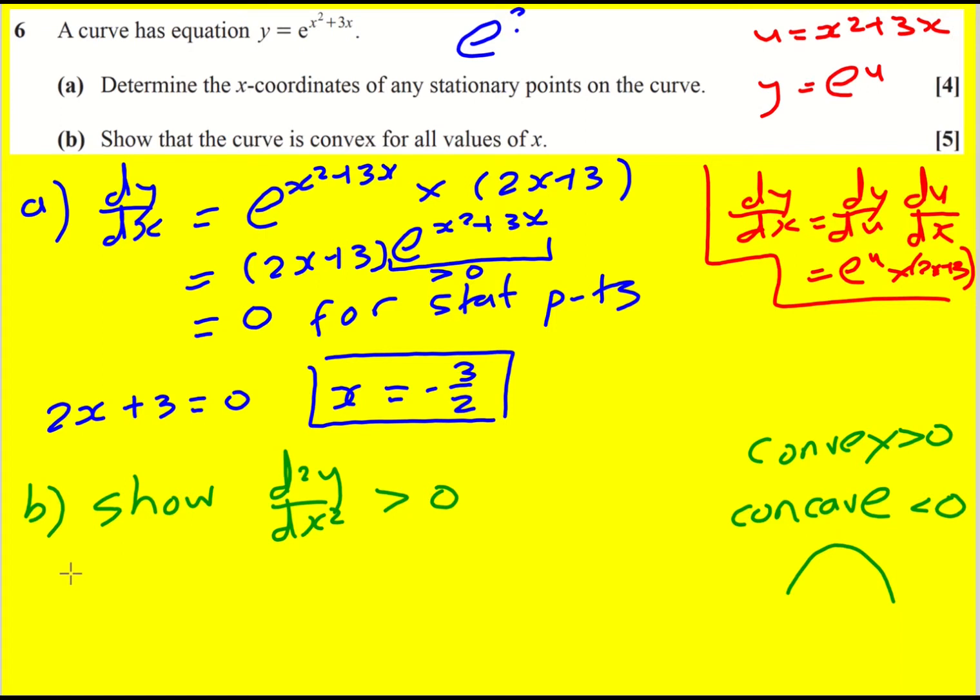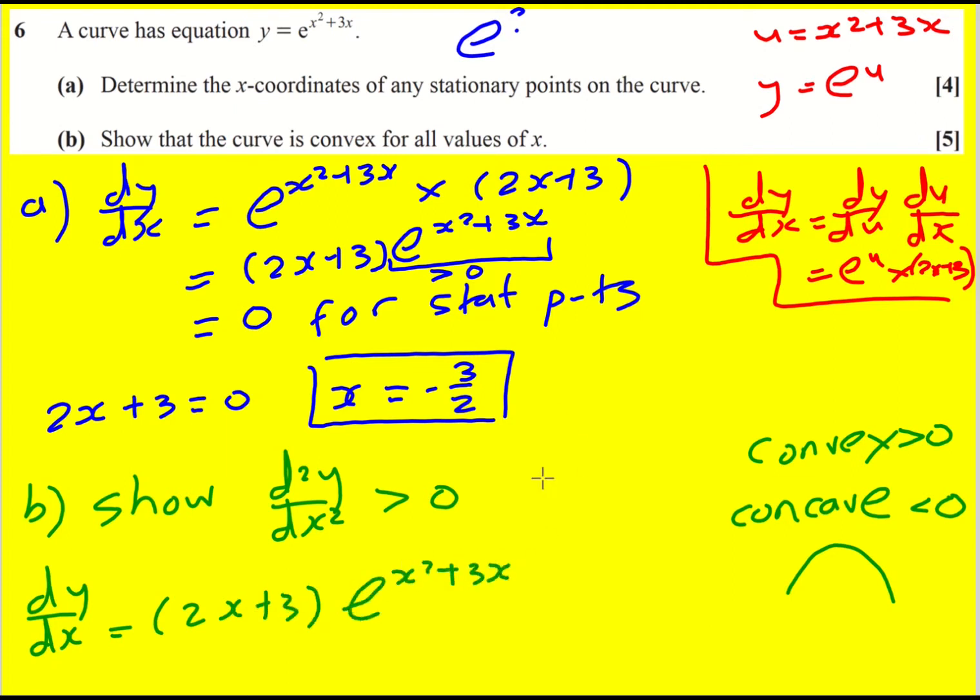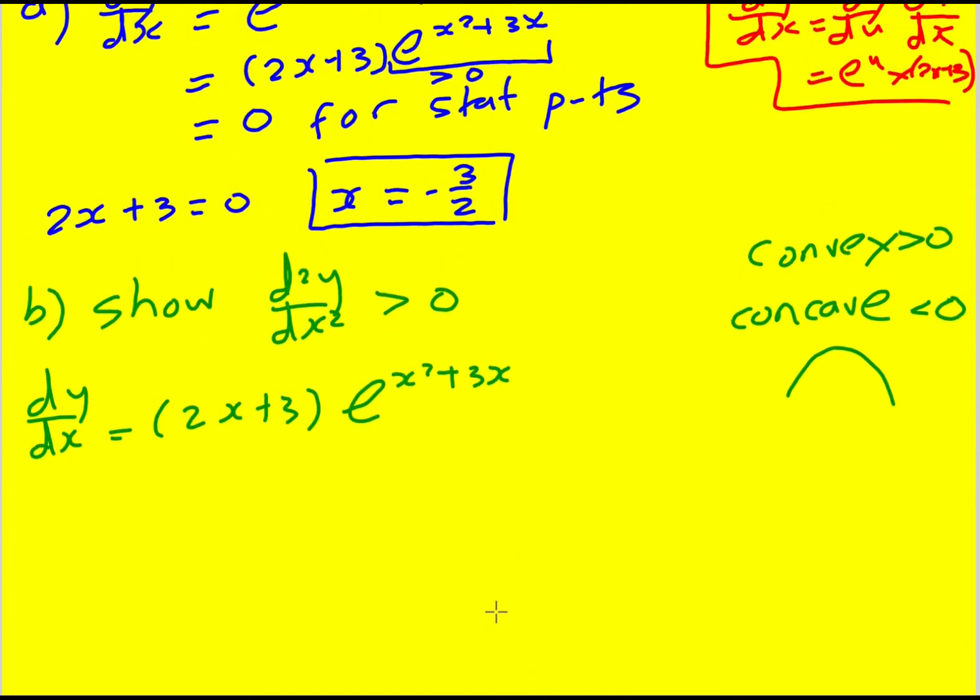Let's find the second derivative. We need to apply differentiation again. I've got dy by dx equals 2x plus 3 times e to the x squared plus 3x. This time, it's the product rule combined with the chain rule. I'll call this u and this v. u dash is 2 and v dash is 2x plus 3 times e to the x squared plus 3x, because that's what we did in part a.